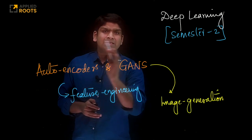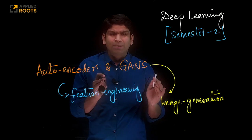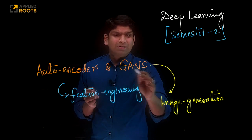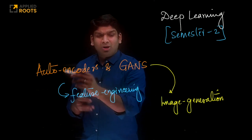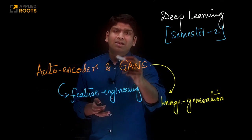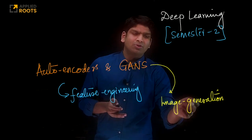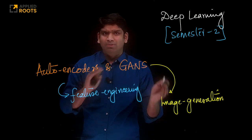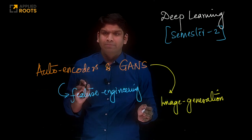There are also a miscellaneous bunch of topics like generative models — GANs and autoencoders — which can be used for feature engineering. Similarly, GANs can be used for image generation. We will also touch upon some of these concepts.